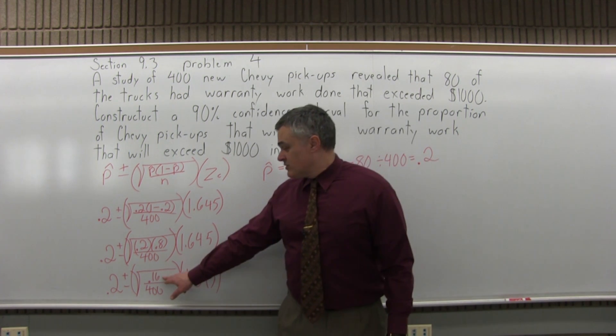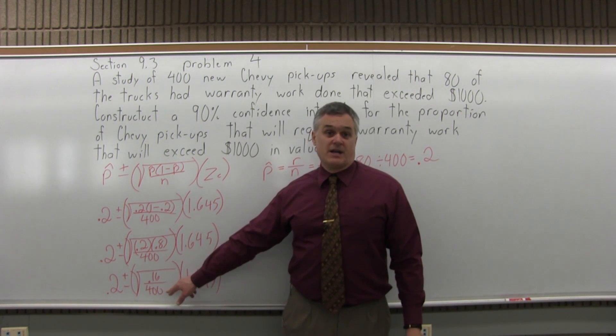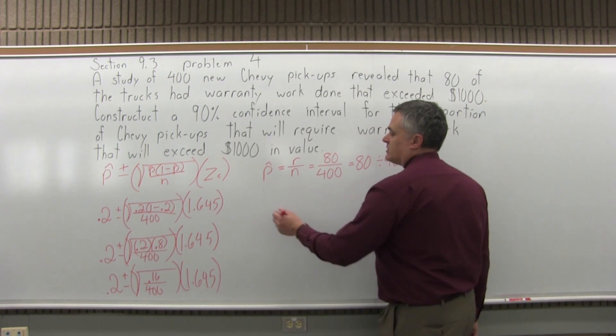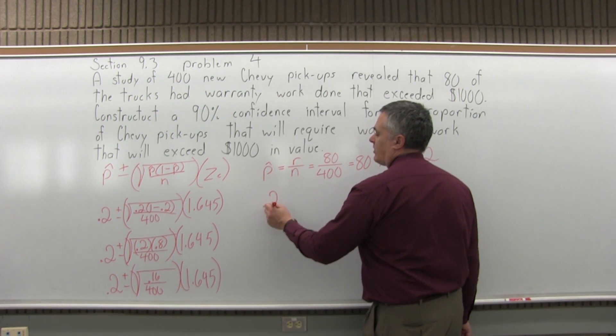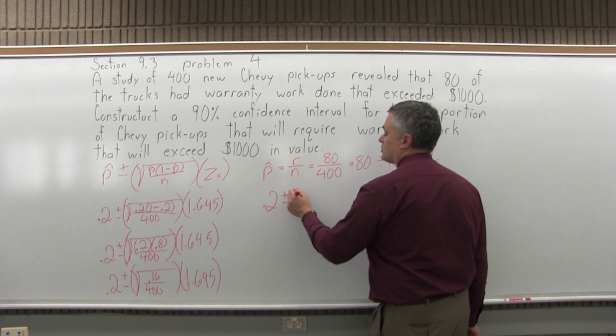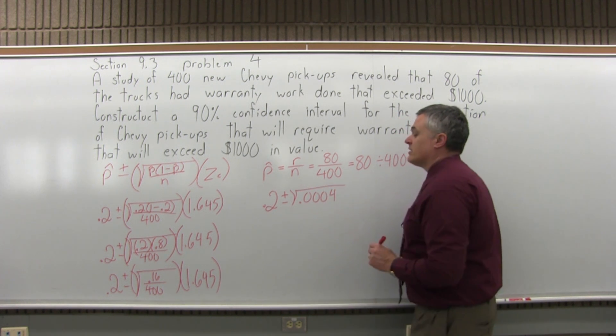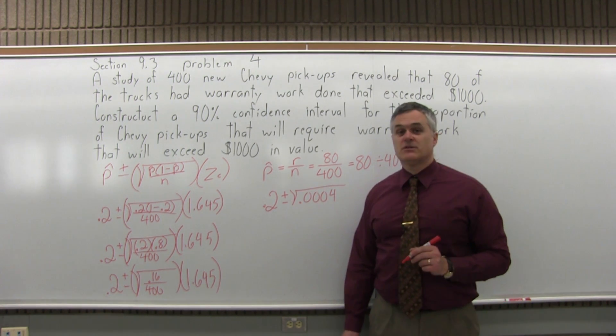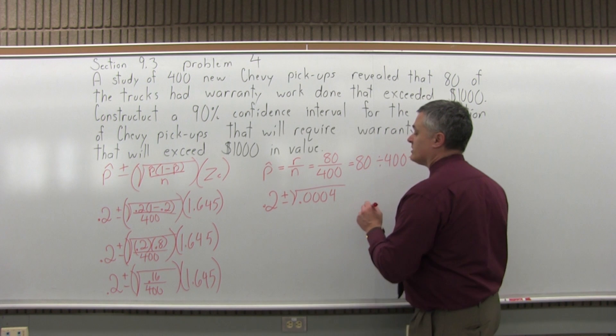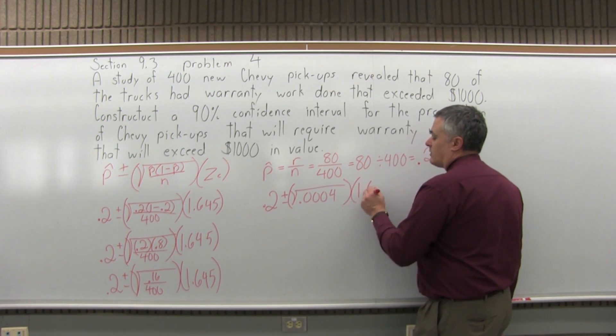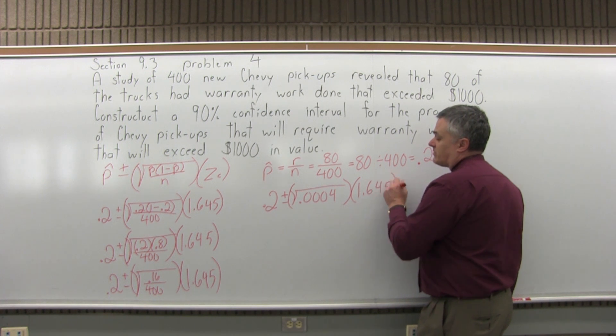So next thing I can do is do this division 0.16 divide by 400, which you'd probably want to do with your calculator. So that'll give me 0.2 plus or minus the square root of, when you divide 0.16 divided by 400, your calculator will tell you it comes out to 0.0004. That's the value under the square root. So I haven't done the square root yet. So I'll do that in a minute. The 1.645 is still at the end of the formula.